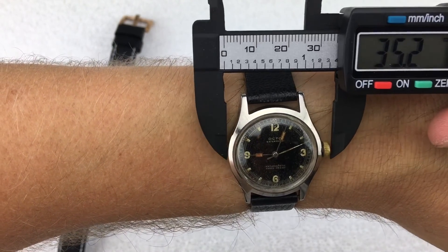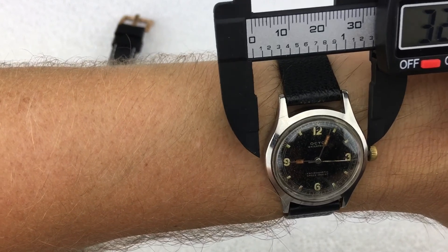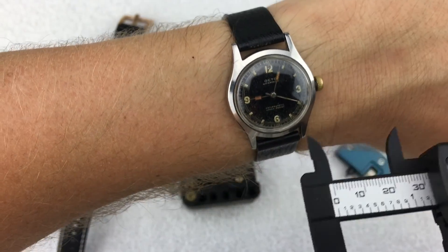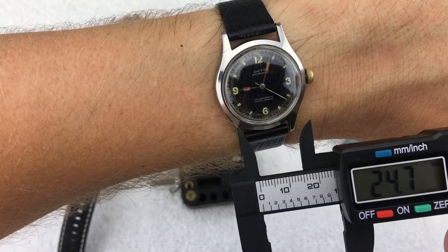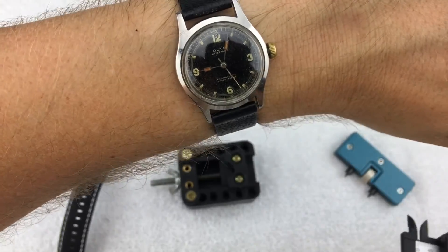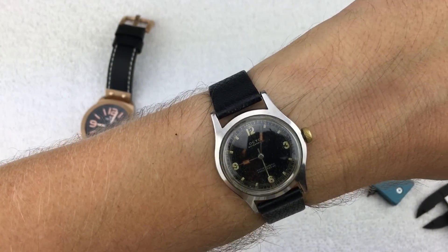This one with the crown is about 34 millimeters, about 30-31 without the crown. It's got about a 16 millimeter band on it so you could definitely change it out and do some other stuff.